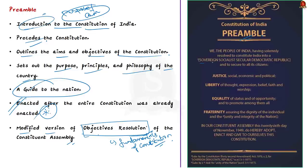Every single word in the preamble is highly important for the examination. It declares India as a sovereign, socialist, secular, democratic, and republican state, which draws its authority from the people. It also intends to provide social, economic, and political justice to its citizens. Additionally, it assures the liberty of thought, expression, belief, faith, and worship; equality of status and opportunity; and aims at securing fraternity based on dignity of the individual and the unity and integrity of the nation.